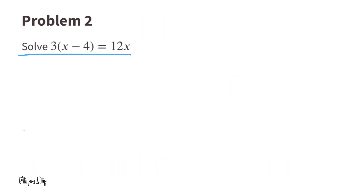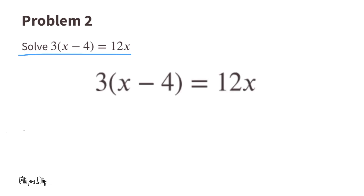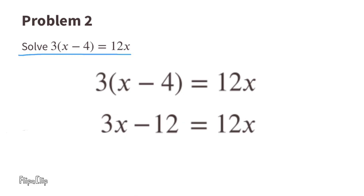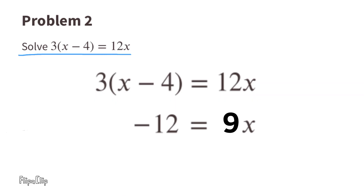Problem number 2: solve 3 times (x minus 4) equals 12x. Use the distributive property to multiply 3 times x, which is 3x, and 3 times negative 4, which is negative 12. Now the equation reads 3x minus 12 equals 12x. To get the x's all on one side, I'm going to subtract 3x from both sides. 3x minus 3x cancels out, and 12x minus 3x equals 9x.